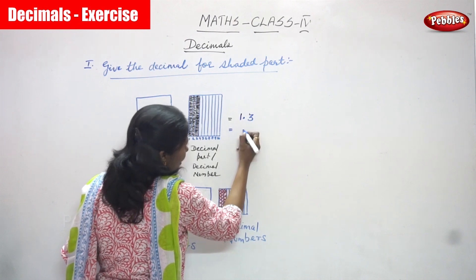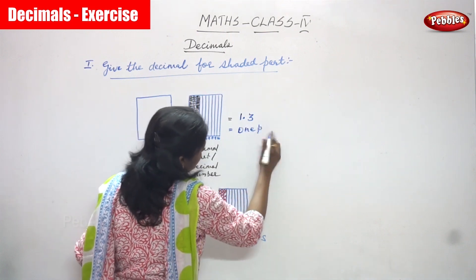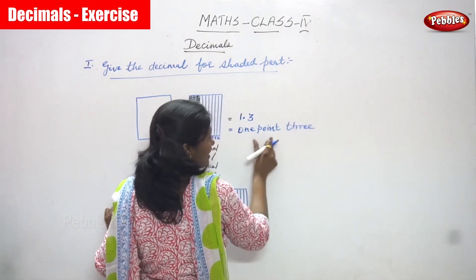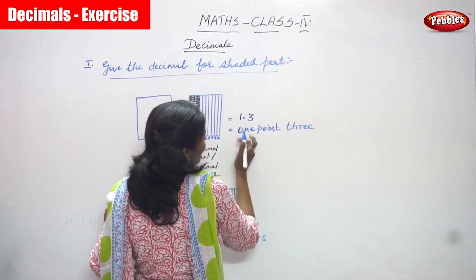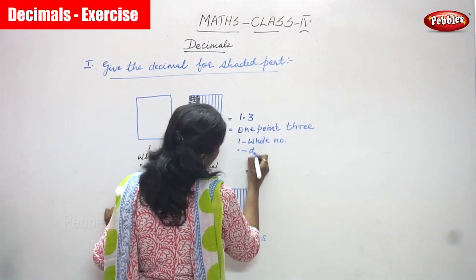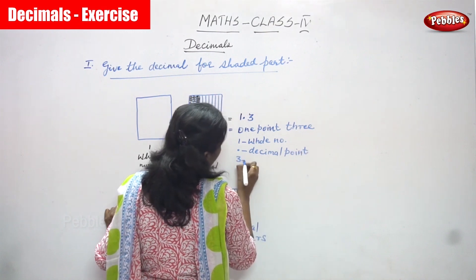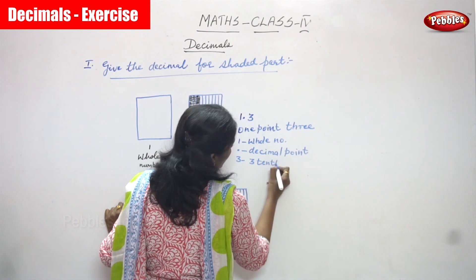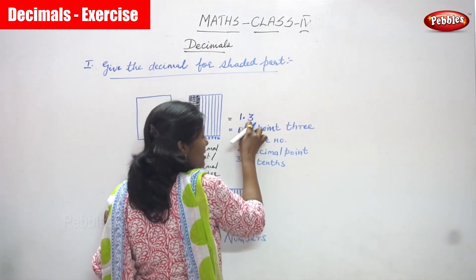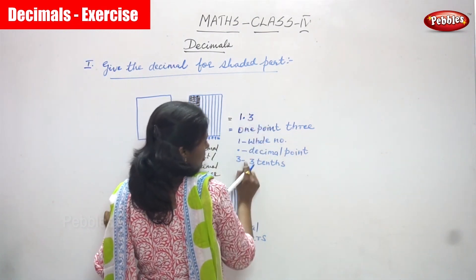So how are we going to write it? That is one point three. This is the way you have to write it in word form — one point three. One is a whole number, this is a decimal point, and three is three tenths. After the point, the first digit that comes — how we read that number — is tenths. So three tenths.